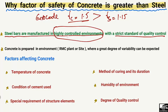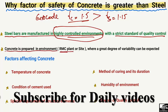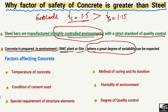Concrete, on the other hand, is prepared in environments such as a ready-mix concrete plant or on-site, where a great degree of variability can be expected. Due to this high variability of concrete strength — because of production on-site or in ready-mix plants — we take a higher value of the factor of safety for concrete, as there are more chances of higher variation in its strength.